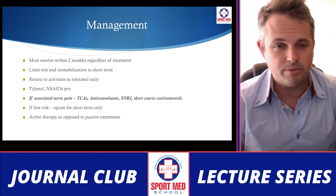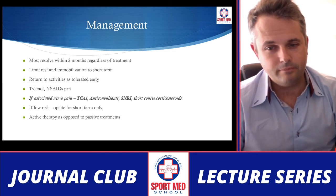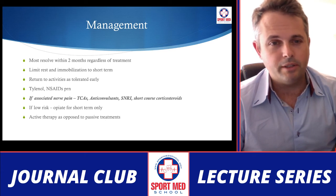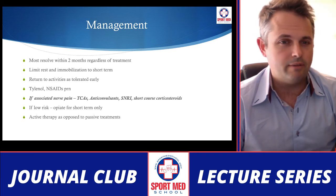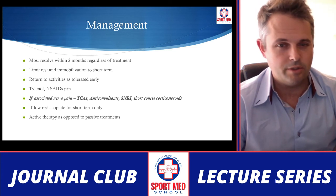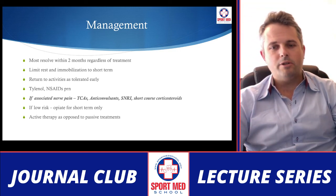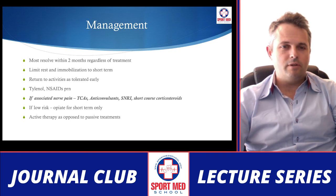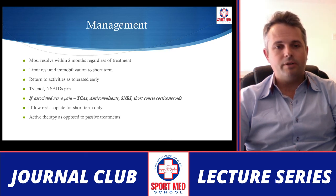Medication-wise, start with Tylenol or anti-inflammatories as needed. If there is associated nerve pain, consider tricyclics, anticonvulsants, potentially an SNRI such as venlafaxine or duloxetine, and short-course corticosteroids are another potential treatment. TCAs or anticonvulsants are a nice addition especially if there is concern about addiction risk with opiates, and they tend to have a better effect than opiates for these particular symptoms. If the patient is low risk and in severe pain, short-term opiates are a potential option.